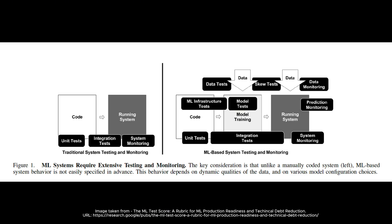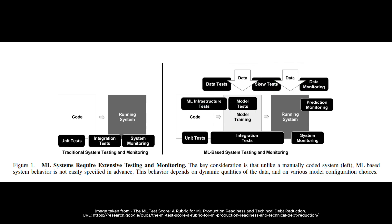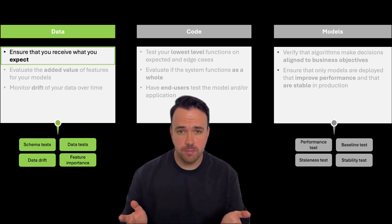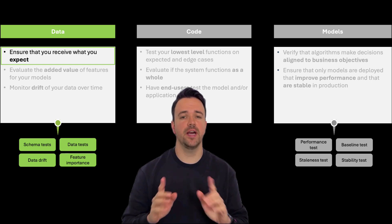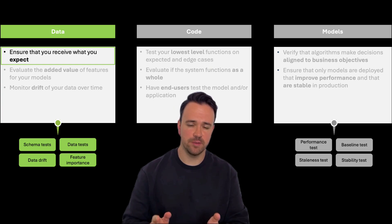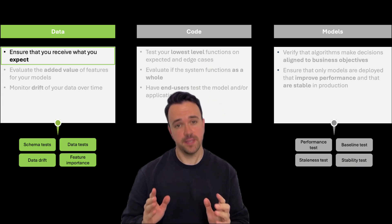This is even more critical for machine learning systems. Unlike traditional software, machine learning depends not just on code, but also on data and models. Each of which needs rigorous testing. The data defines the model's ability to learn and infer — it's not just a supporting element, it's the foundation. So there are a lot of things that we need to monitor and test, but today I would really like to focus on the foundation.